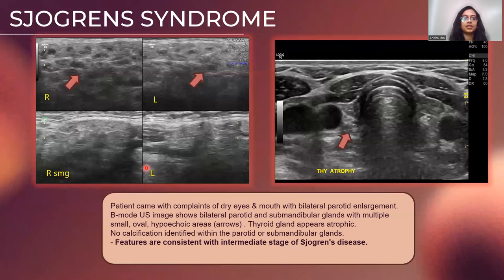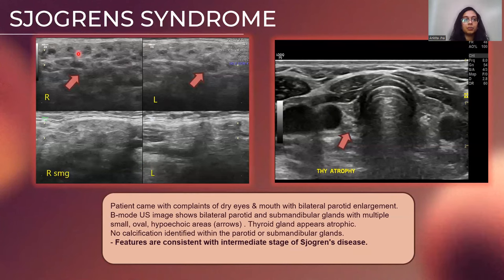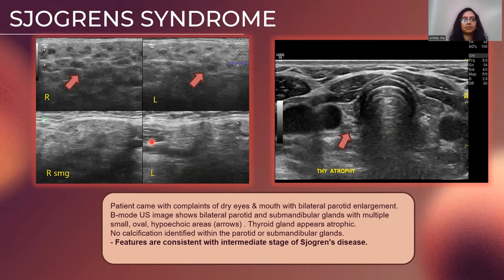We had a patient with complaints of dry eyes and mouth with bilateral parotid swelling. On B-mode ultrasound, the parotid and submandibular glands showed multiple small hypoechoic areas within and the thyroid gland appeared atrophic. However, there was no evidence of calcification within the glands. These are consistent with an intermediate stage of Sjögren's disease.